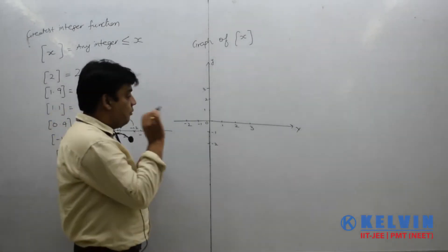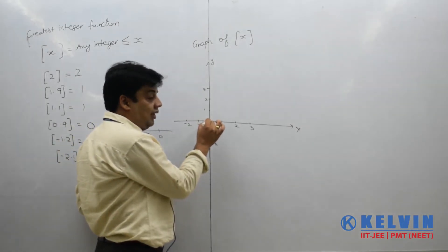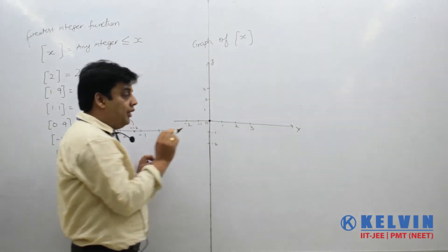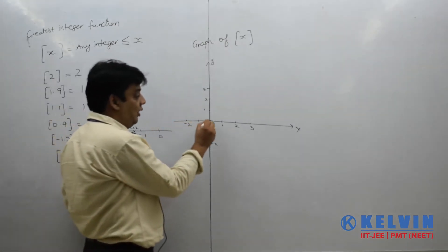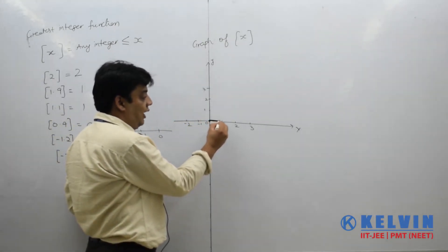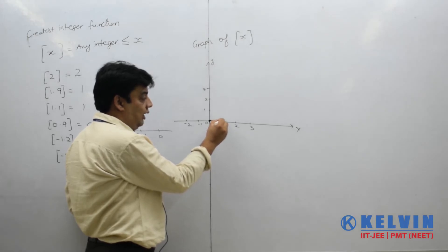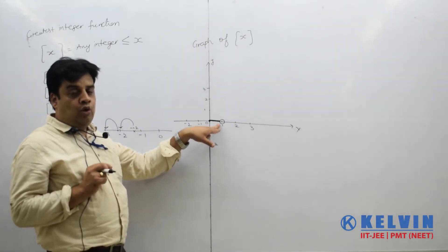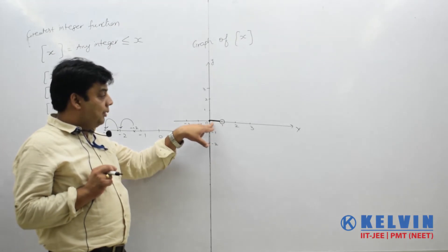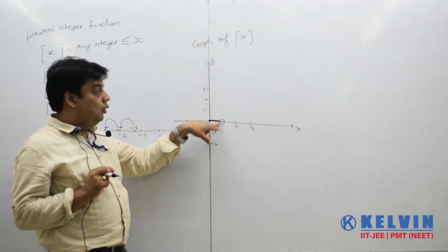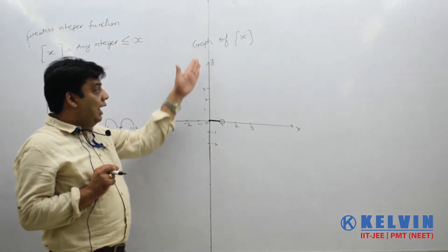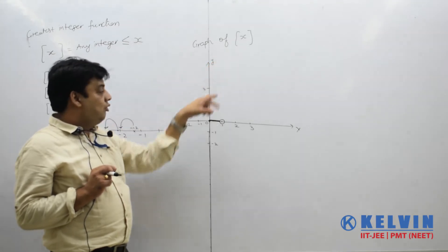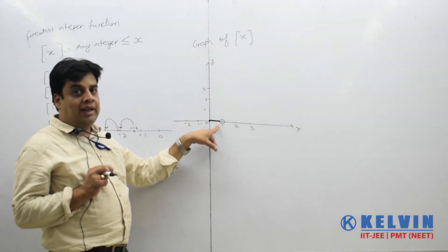Now look here. For x values from 0 to just before 1 — such as 0.1, 0.2, 0.3 — the Greatest Integer is 0 in all cases. As soon as we move to x equals 1, the Greatest Integer of 1 is 1. We draw an open circle at x equals 1 on the y equals 0 line, meaning the graph is not there at that point. So y equals Greatest Integer of x gives a horizontal segment at y equals 0 from x equals 0 up to but not including x equals 1.